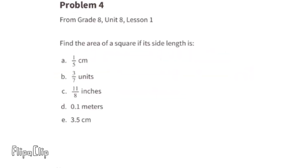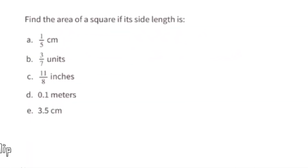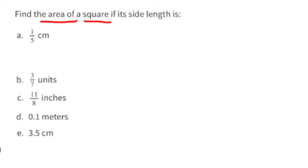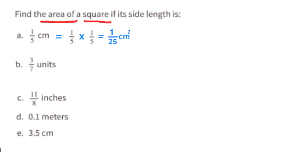Problem number four: Find the area of a square given its side length. Part A: side length is one-fifth centimeters. One-fifth times one-fifth equals one twenty-fifth centimeters squared. Part B: side length is three-sevenths units. Three-sevenths times three-sevenths equals nine over forty-nine units squared.